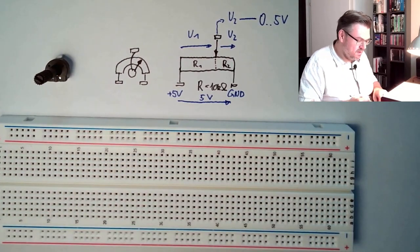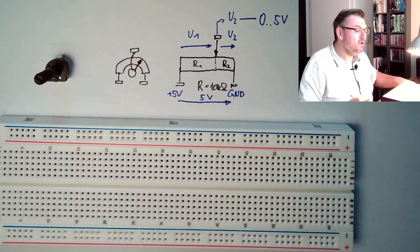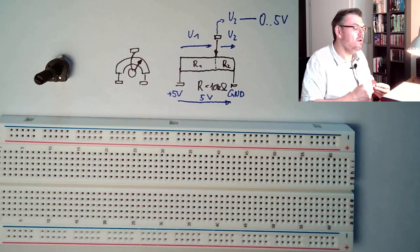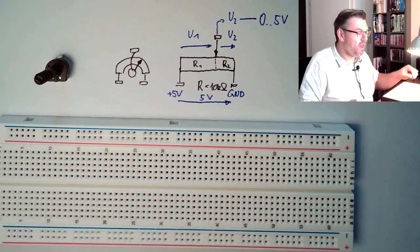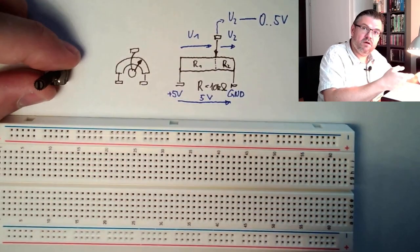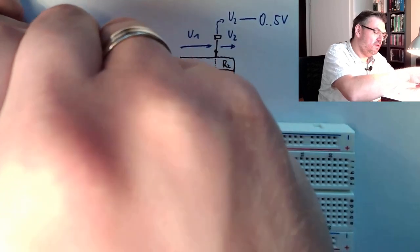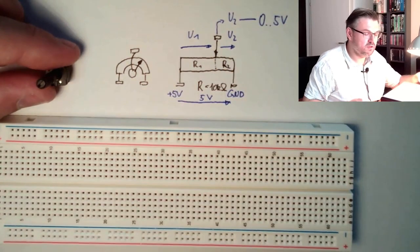That's it. So a potentiometer can divide the voltage applied by the turn of a shaft - you can select the output of the potentiometer.